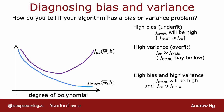To summarize how to diagnose bias and variance: if your learning algorithm has high bias or has underfit the data, the key indicator will be if J_train is high — that corresponds to the leftmost portion of the curve, and usually J_train and J_CV will be close to each other. For high variance, the key indicator is if J_CV is much greater than J_train — this rightmost portion of the plot where J_CV is much greater than J_train, and usually J_train will be pretty low. That's what happened when we fit a very high-order polynomial to a small dataset.